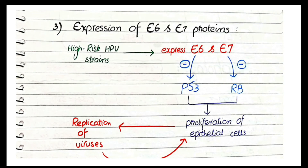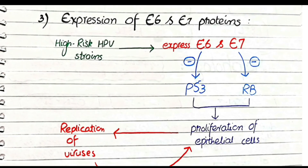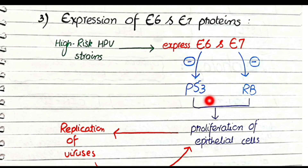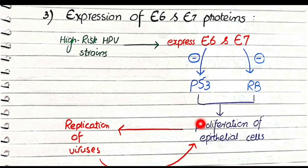The high-risk HPV strains infect the transformation zone of the cervix and express two proteins: E6 and E7. Protein E6 causes inhibition of P53, and protein E7 causes inhibition of the retinoblastoma protein (RB). Both P53 and RB are tumor suppressor genes, and when HPV inhibits these two tumor suppressor genes, the cells of the transformation zone start to proliferate rapidly.